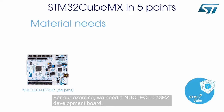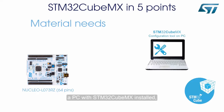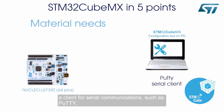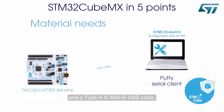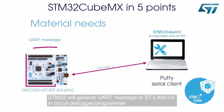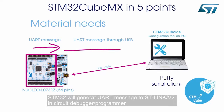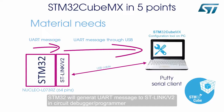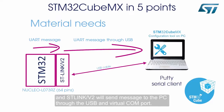For our exercise, we need a Nucleo L073RZ development board, a PC with STM32CubeMX installed, a client for serial communications such as PuTTY, and a Type A to Mini B USB cable. STM32 will generate a UART message to ST-Link V2 in-circuit debugger programmer, and ST-Link V2 will send a message to the PC through the USB and virtual COM port.